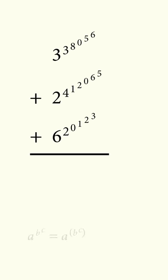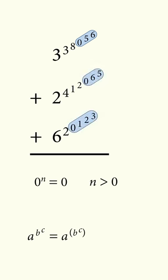To solve this problem, we'll use exponent rules. If you have nested exponents, you want to group and work from the top down. Then, 0 raised to any positive power is equal to 0, so we can simplify all three numbers in this way.